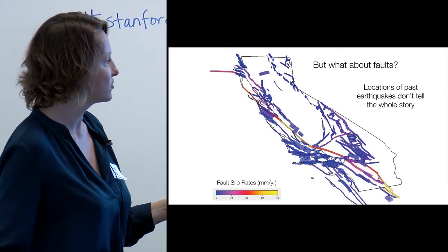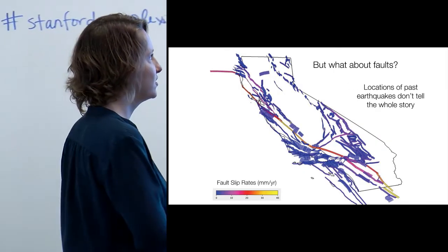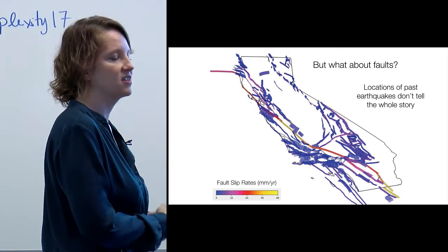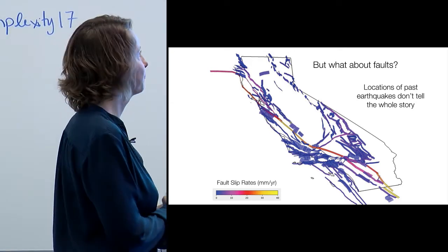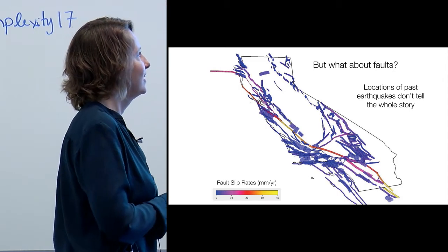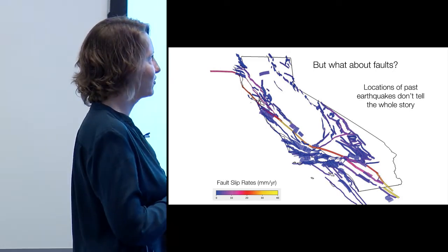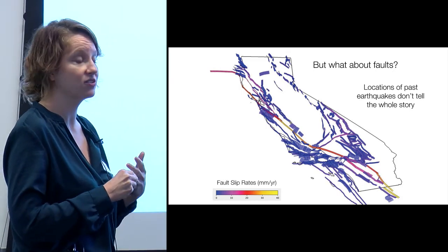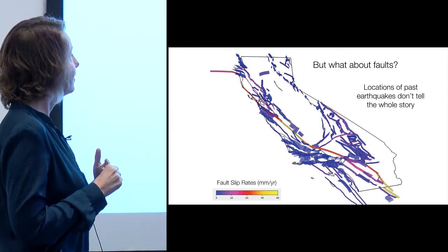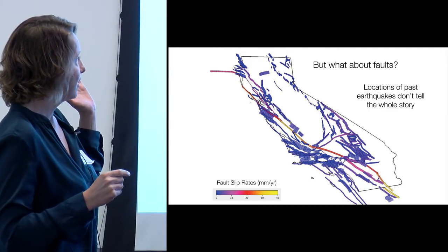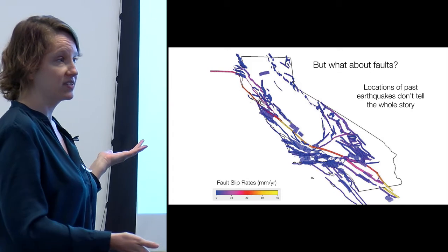So everything I've told you so far just uses earthquake locations, times, and sizes. But I haven't said anything about faults. And faults should be important, right? Locations of earthquakes, it turns out, don't tell us the whole story.